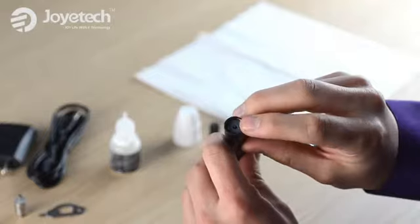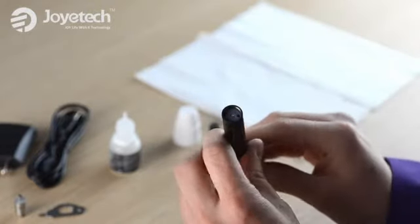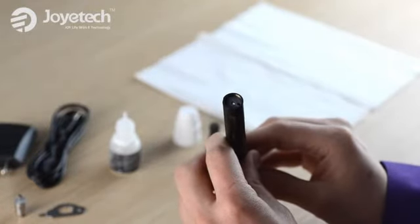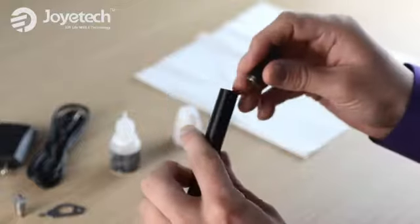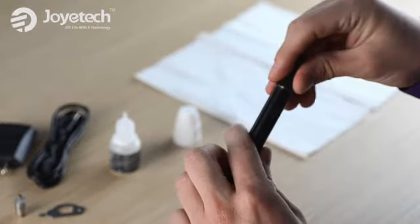The hole in the middle of the eCom is the air outlet hole. Please do not fill eJuice inside this hole. After completing the filling of the eJuice, screw on the mouthpiece within one minute.